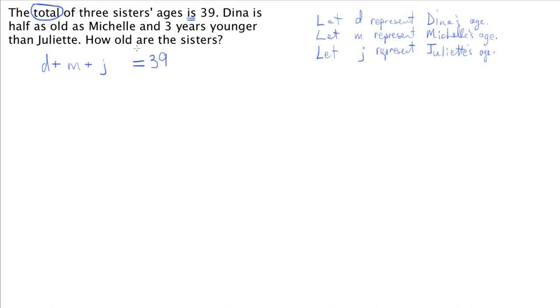If we add them all up, we get 39. And we've got some details about Dina. Dina is half as old as Michelle. You might think of that as Dina equals Michelle divided by two, and those two things are the same. And three years younger than Juliet. So Dina is also Juliet minus three because Dina is younger by three years.